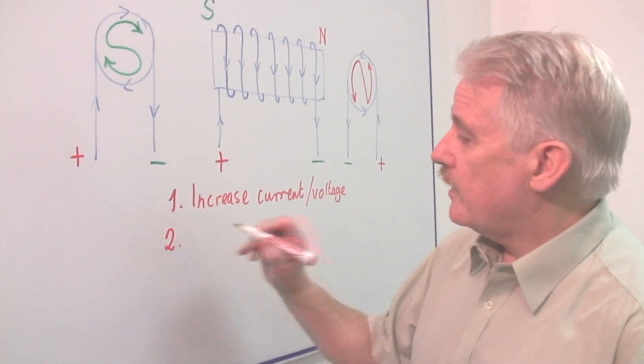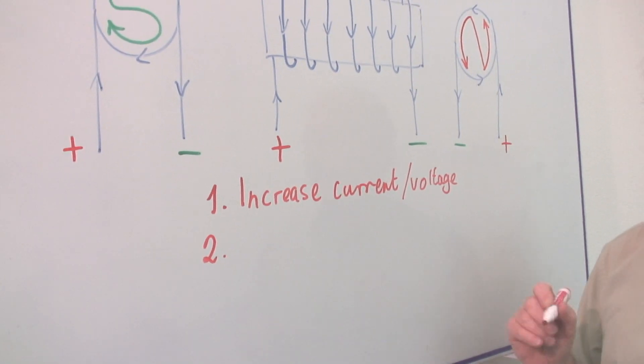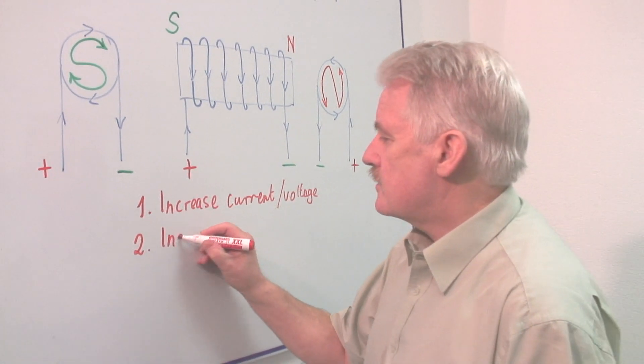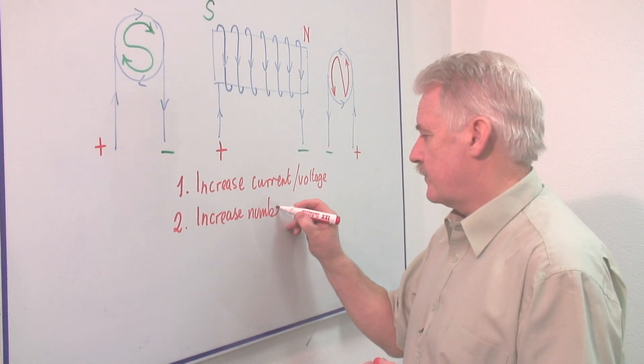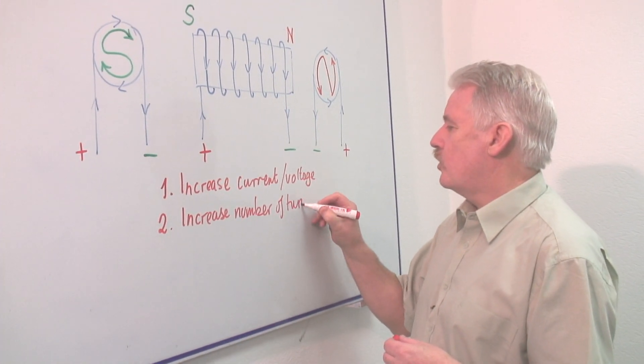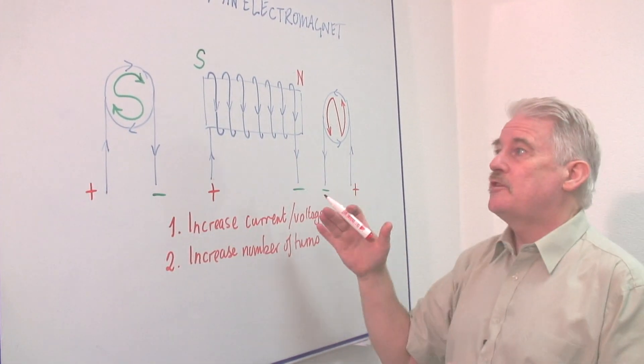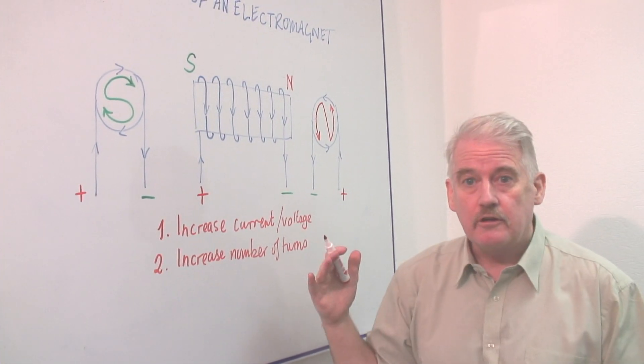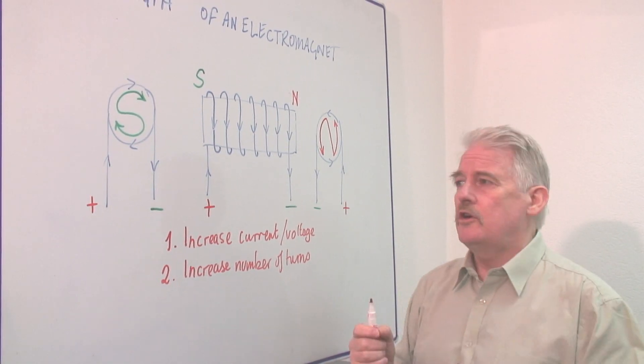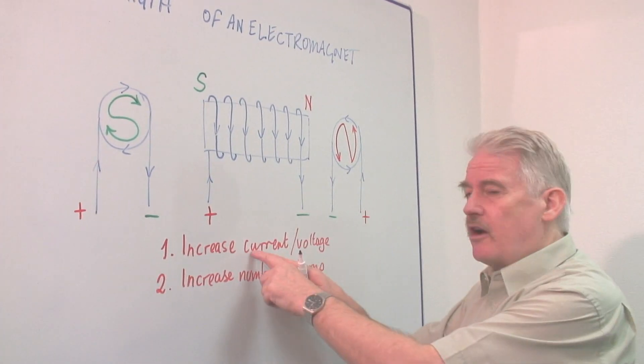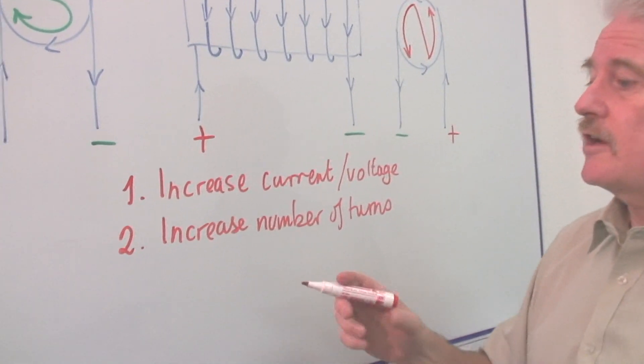The second way is probably the one that you would employ first. Increase the number of turns on the magnet - the number of coils around. So instead of having, as we've got here, seven, you'd have 70 or 700. And if you look at most electromagnets, they have many turns of very thin wire to keep the current small but the number of turns high. That will increase the strength of the magnet.